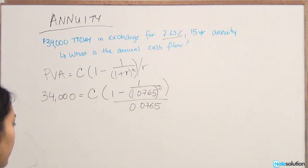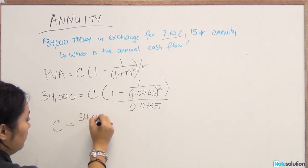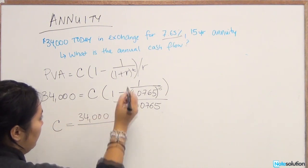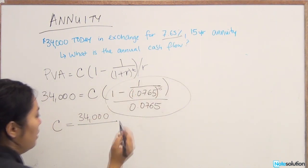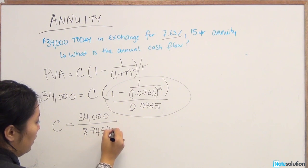Once you simplify this equation and rearrange it, you get C equals 34,000 divided by this expression here, which equals 8.74548.